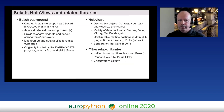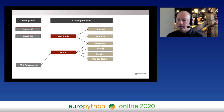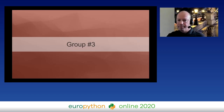Looking at our updated map, we now have two low-level core libraries — Matplotlib and Bokeh — each with several higher-level wrappers. Let's move forward to the third group of Python visualization libraries.